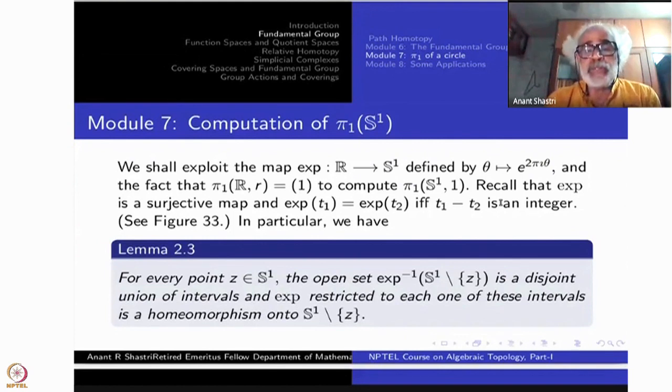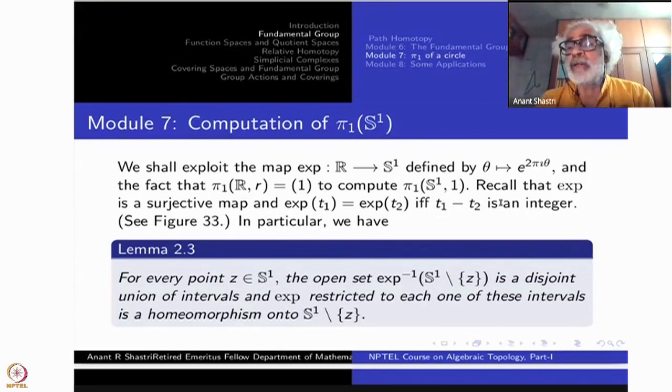So let us first concentrate on what is the big feature of this exponential map. It is a surjective function and exponential of T₁ plus T₂ is exponential of T₁ into exponential of T₂. So the addition inside R goes to multiplication inside S¹. So it is a group homomorphism. What is the kernel? Kernel is determined by 2π, multiples of 2π.